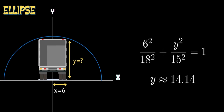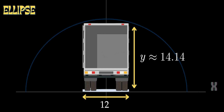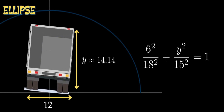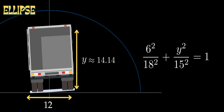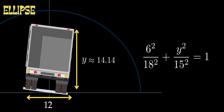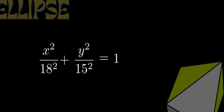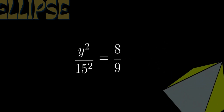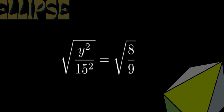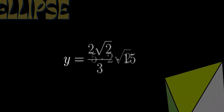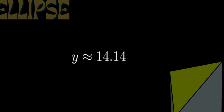The answer is 10√2, which is approximately 14.14. We calculate: 1 minus (6/18)² equals 1 minus (1/3)² equals 1 minus 1/9 equals 8/9. Then y² equals 225 times (8/9). Taking the square root gives y/15 equals 2√2/3, so y equals 5 times 2√2 equals 10√2. Therefore the maximum truck height is approximately 14.14 feet.